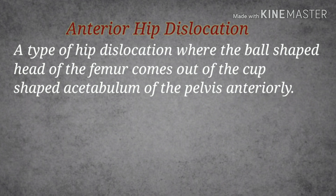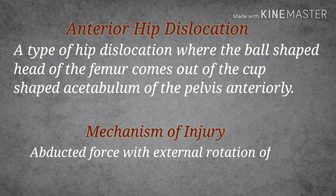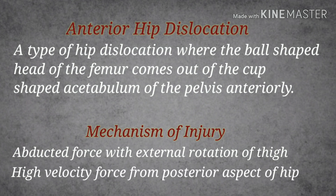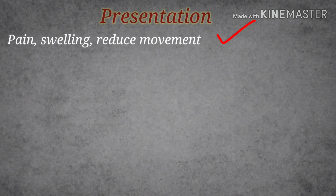Regarding the mechanism of injury in anterior hip dislocation, there is an abducted force with an externally rotated thigh, and there may be a high-velocity force applied from the posterior aspect of the thigh. The clinical presentation includes pain, swelling, and reduced movement.